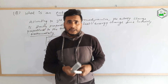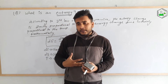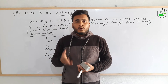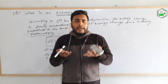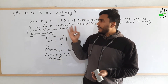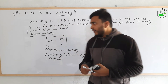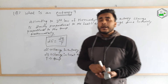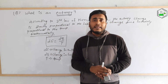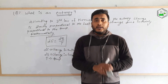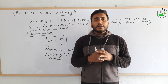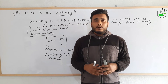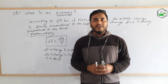That means in a system, if it is getting heat energy, its molecules vibrate more randomly, so the entropy change will increase. That is what the second law of thermodynamics actually means, and this is the mathematical form of entropy. I hope you understood everything about Entropy. If you like the video, please share it as much as you can. Thank you for watching the video.